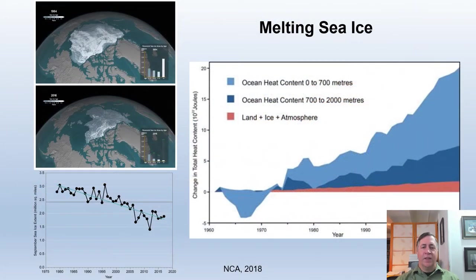Arctic sea ice has decreased, on average, between 3.5 and 4.1% per decade since the early 1980s. In September, when ice coverage reaches its annual minimum, the extent has decreased 10.7 to 15.9% per decade. Arctic sea ice loss is expected to continue, very likely resulting in nearly ice-free late summers by the 2040s.